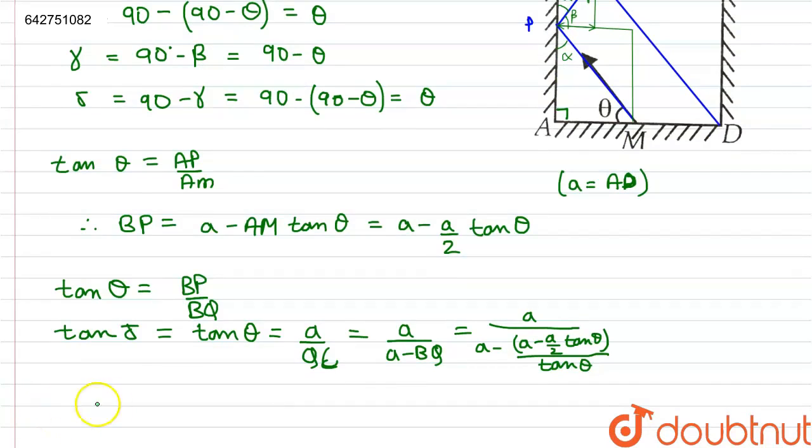On simplifying this we can write tan theta equals A tan theta by ((3 by 2) tan theta minus A).